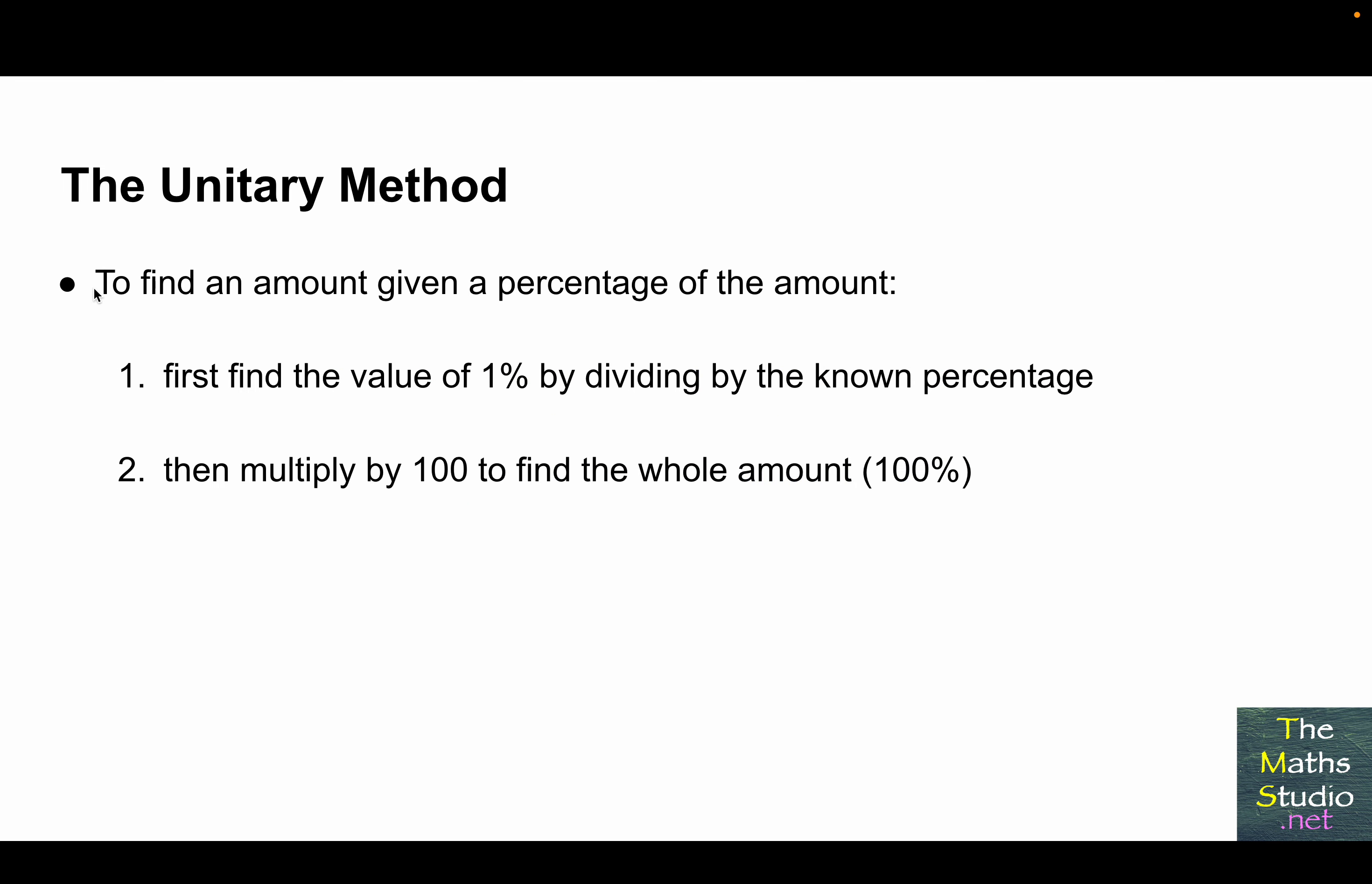So, generally speaking, to find an amount given a percentage of the amount using the unitary method, we find the value of 1% by dividing by the known percentage, then multiply that by 100 to find the whole amount. And notice that in the calculations, that the percentage symbol was not used. We're just dividing by the number before the percentage symbol. Do not include the percentage symbol in your calculations.